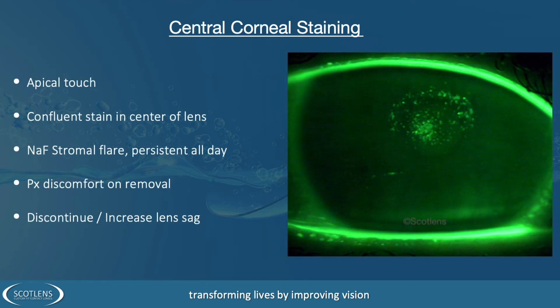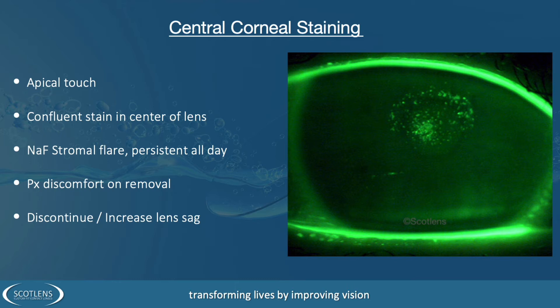If we see a more confluent stain like we have here, where there's a patch of grouped staining in the corneal centre, this is when we need to take action. The patient will usually have symptoms — discomfort when they remove the lens, foreign body sensation — and this will cause stromal flare visible at slit lamp assessment. It will also be persistent even towards the end of the day. This is where you need to discontinue wear and increase the sag of the lens that you're fitting.